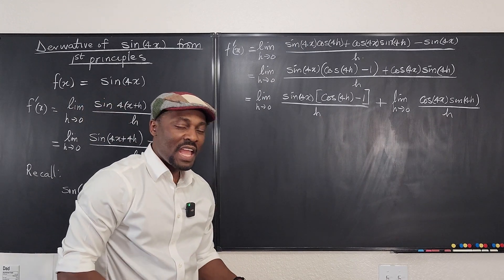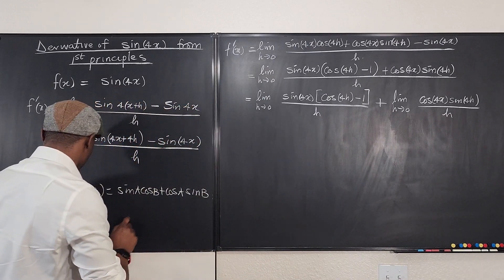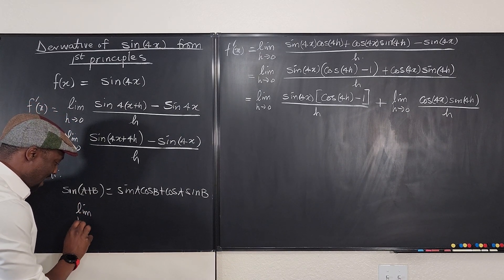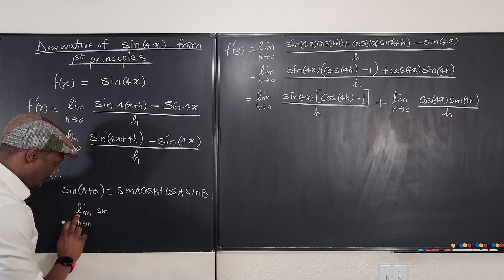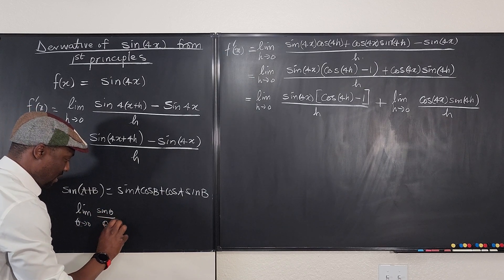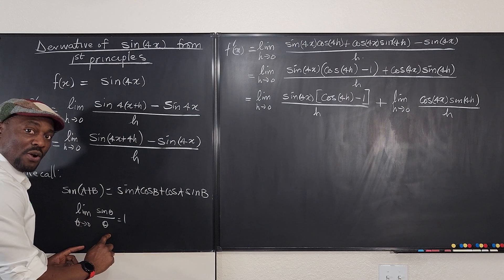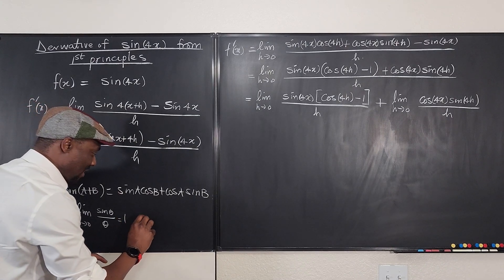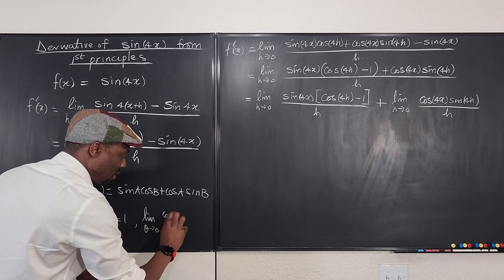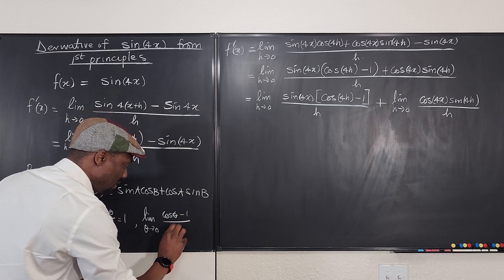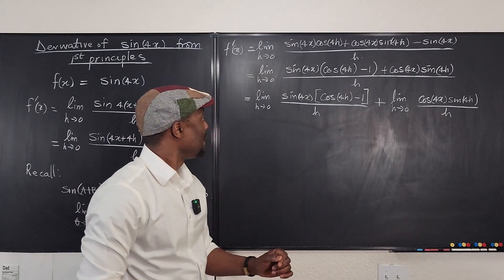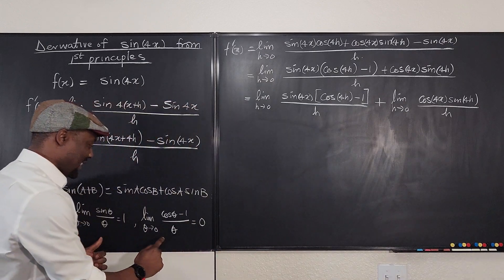Now, what can I do? Now, I want you to recall again if I can do the recall here. So this is the recall section. Recall also that the limit as h goes to 0, let's use theta, of sin(theta) over theta is equal to 1. This is something you have to recall. You also need to know that the limit as theta goes to 0 of cos(theta) minus 1 over theta is equal to 0. You have to recall these two. So at this point, I need to use these identities.